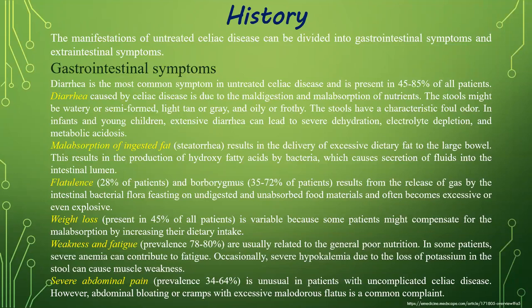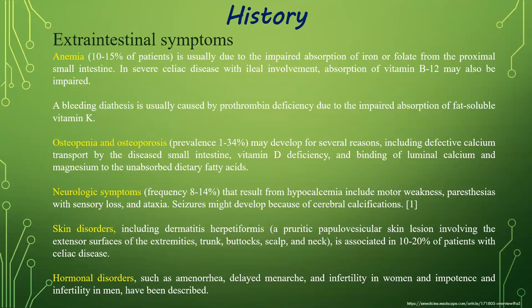Weight loss in half of patients with celiac disease is variable because some patients may compensate for malabsorption by increasing their dietary intake. Weakness and fatigue in the majority of patients are related to general poor nutrition. In some patients, severe anemia can contribute to fatigue. Occasionally, severe hypokalemia due to loss of potassium in the stool can cause muscular weakness. Severe abdominal pain is unusual in patients with uncomplicated celiac disease; however, abdominal bloating or cramps with excessive malodorous flatus is a common complaint.